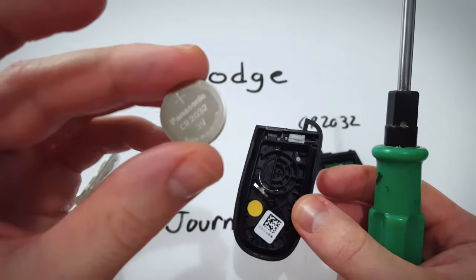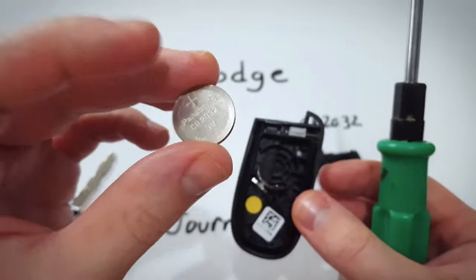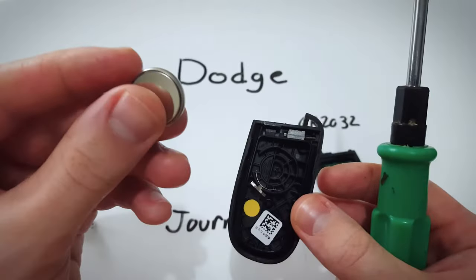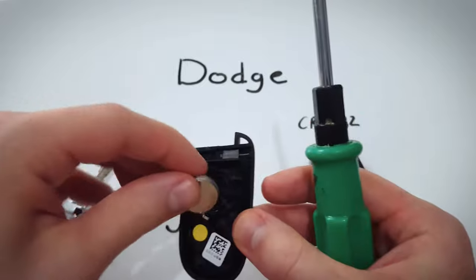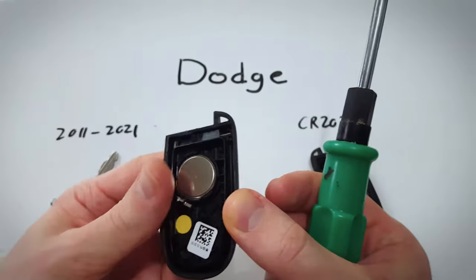There we go, 2032, you can see it. Take a new one, make sure this positive side goes face down just like that and you just want to click it into place.